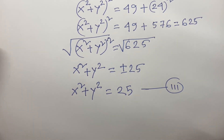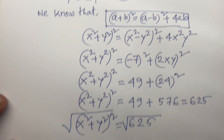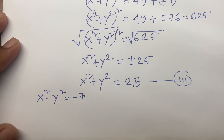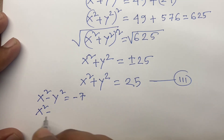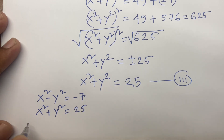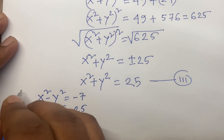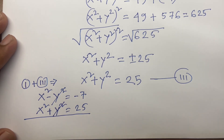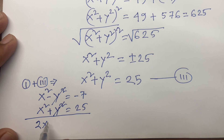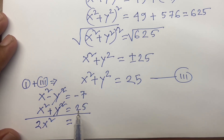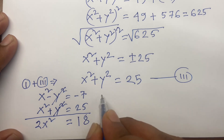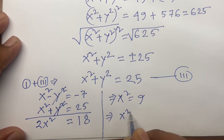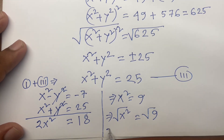Adding equation 1 (x² − y² = −7) and equation 3 (x² + y² = 25), the y² terms cancel. So 2x² equals 18, giving x² equals 9, and x equals plus or minus 3.